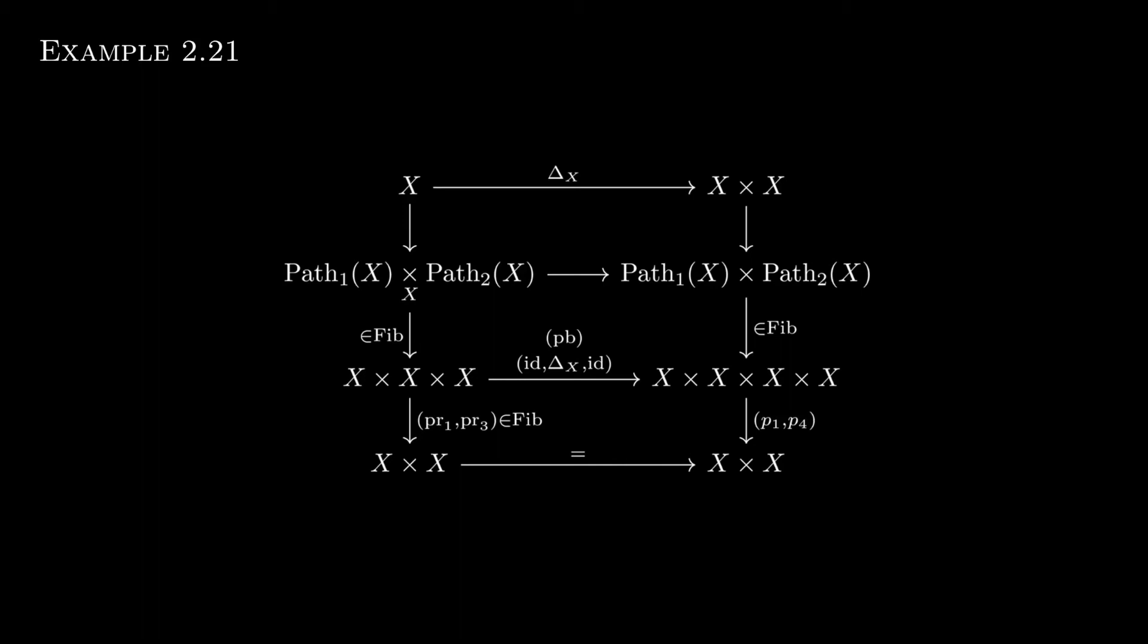We can generalize this idea and obtain a path space object from any other two path space objects by forming what is called the fiber product, under the assumption that x is fibrant. It is the pullback in this middle square here.